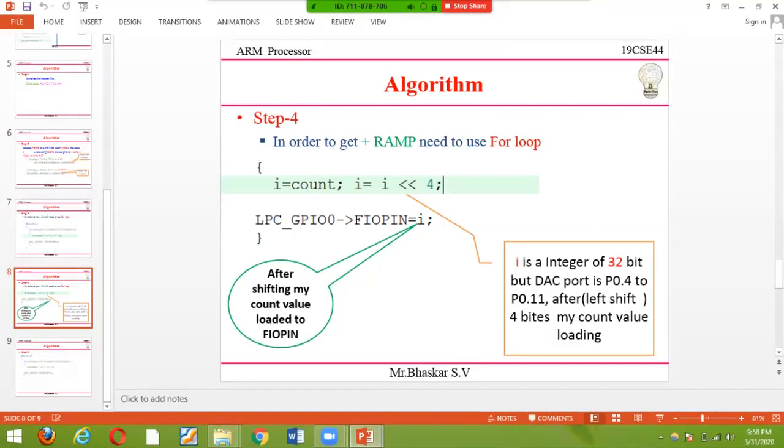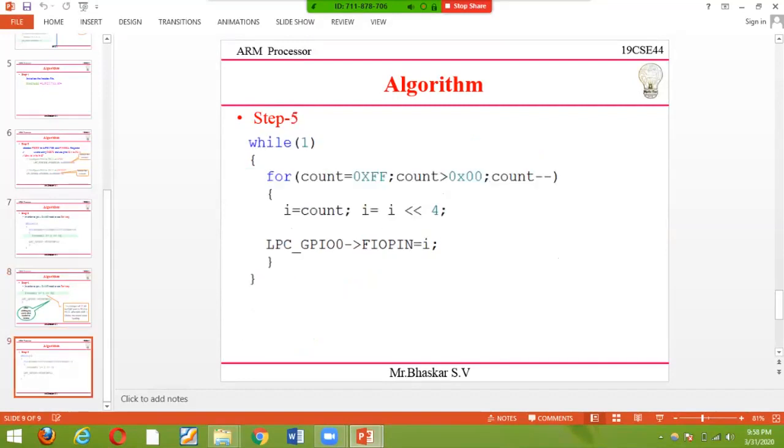LPC GPIO FIO pin - I load my high value, which shifts my count value. Next, we use this for down count.